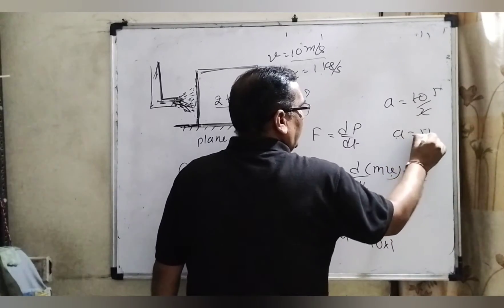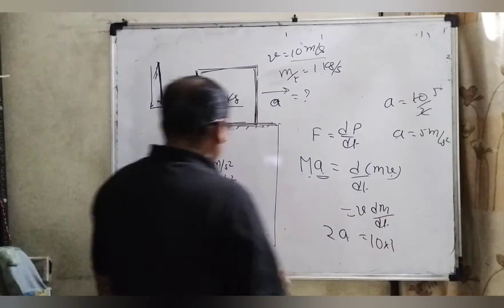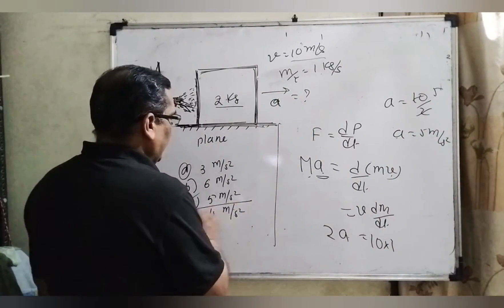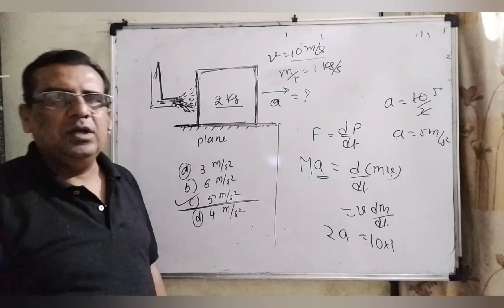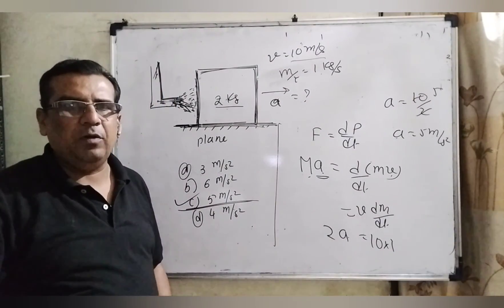A equals 5 meters per second squared. So here our answer C is the correct answer. I hope you understood this short problem.